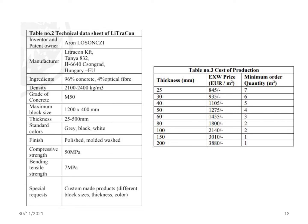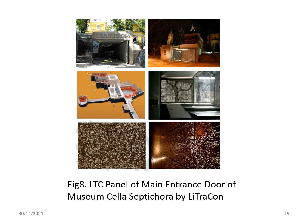Another table shows the cost of production with thickness and price in EUR per square meter, along with minimum order quantities. A figure shows the LitraCon panel of the main entrance door of the Museum Cella Septichora.